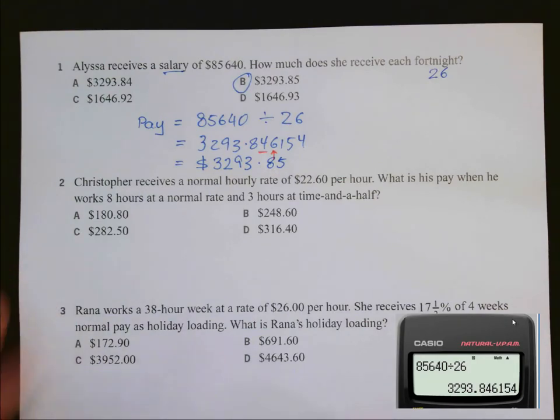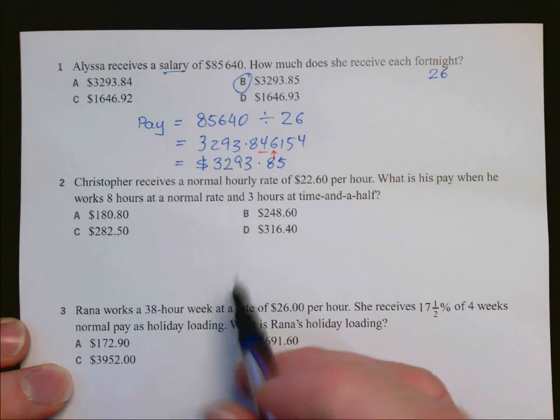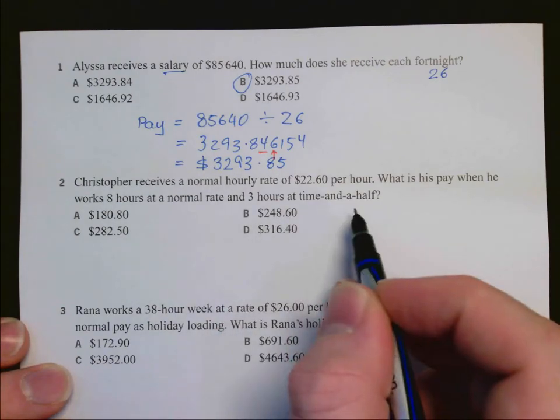In question 2, Christopher receives a normal hourly rate of $22.60 per hour. What is his pay when he works 8 hours at a normal rate and 3 hours at time and a half?